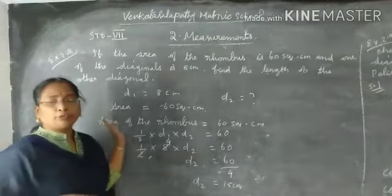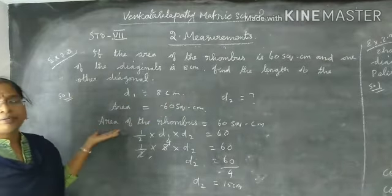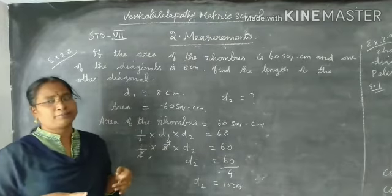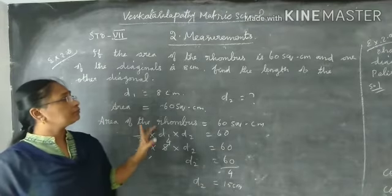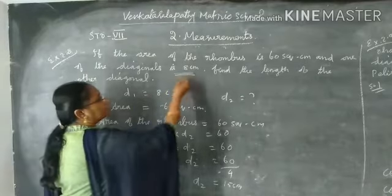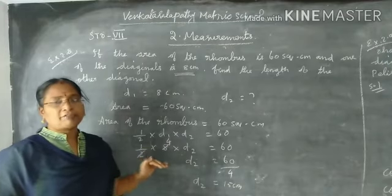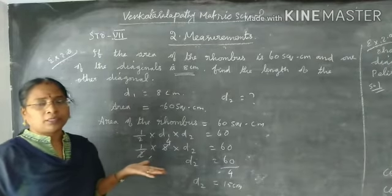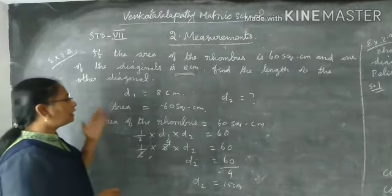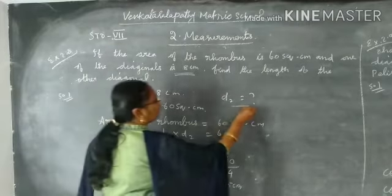Next, example 2.8. If the area of the rhombus is 60 square centimeters, side and one of the diagonals. In this sum, area is given. Area of the rhombus is 60 square centimeters and one of the diagonal is 8 centimeters. So we need to find the other diagonal. For diagonal technique, d1 is given. D1 is 8 centimeters. D2, you have to find d2.